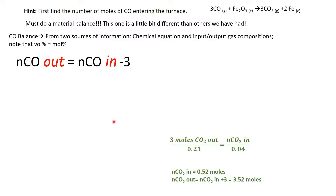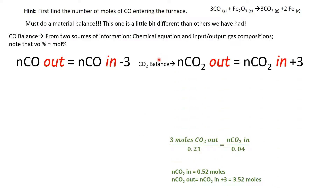Based on this chemical equation, the number of moles of CO out equals the number of moles of CO in minus 3. For CO2, the number of moles of CO2 out equals the number of moles of CO2 in plus 3. Three moles of CO2 are generated by the reaction. We also know that 4% of the CO2 in the output stream came from the input stream, since CO2 doesn't react with Fe2O3 — only CO does.